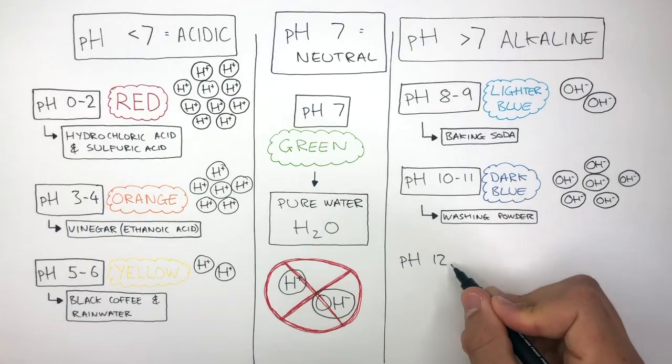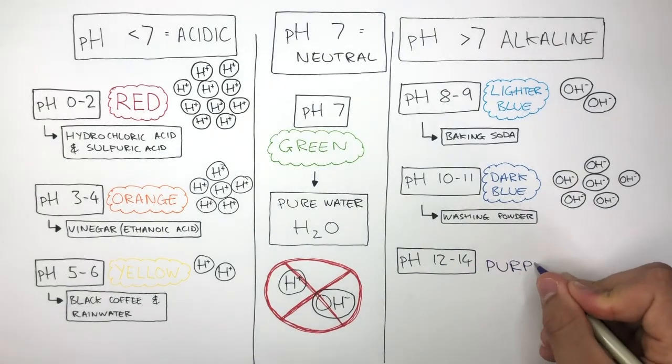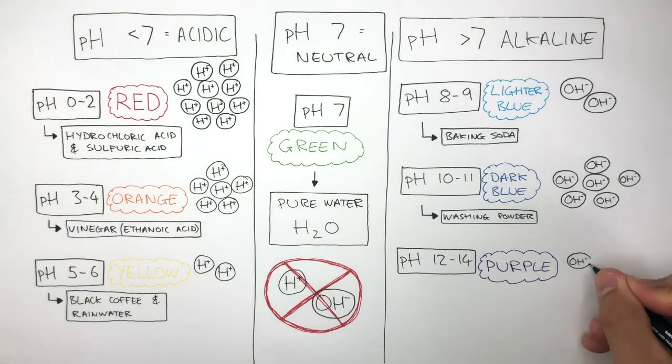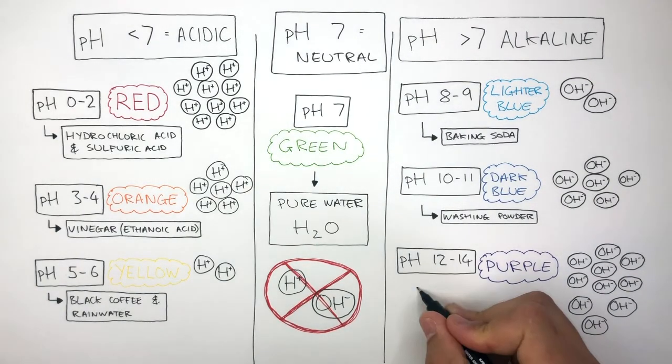A pH of 12 to 14 causes Universal Indicator solution to be purple and this has many hydroxide ions in the solution. An example of this pH would be oven cleaner.